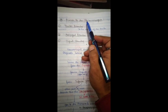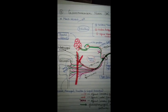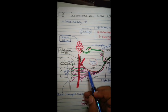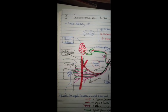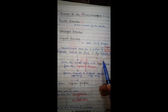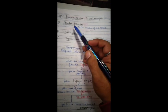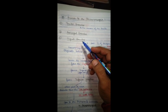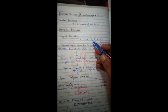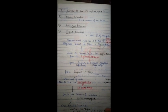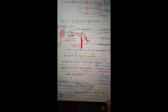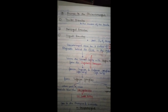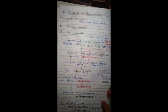The second branch is the branch to the stylopharyngeus, which provides innervation to the stylopharyngeus muscle. Third are the tonsillar branches, which provide innervation to the mucosa of the tonsils. Fourth are the pharyngeal branches. Fifth are the lingual branches, mainly to the posterior one-third of the tongue. So these are the main branches of the glossopharyngeal nerve.